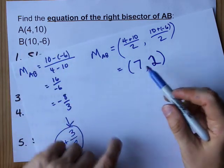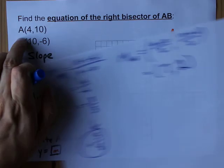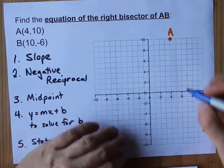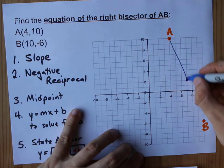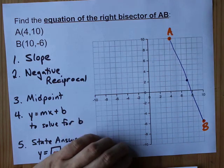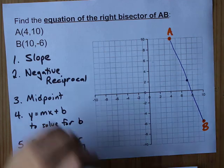Does 7, 2 look like the midpoint of AB here? 7, 2? Yeah, you know what? I believe that that's the midpoint of this line segment there. That makes perfect sense.